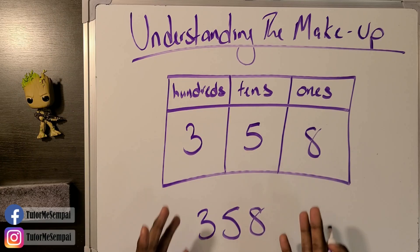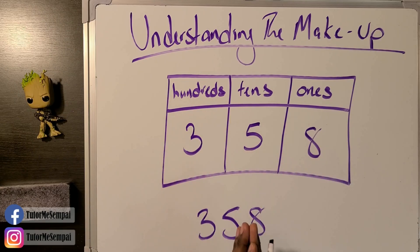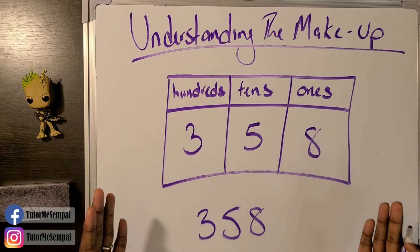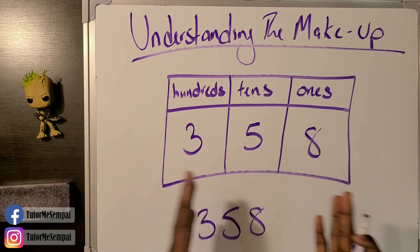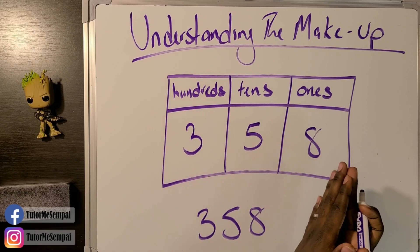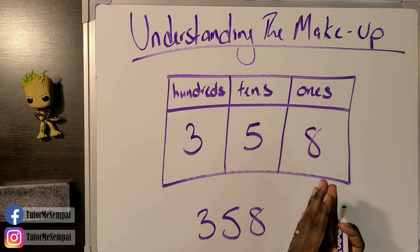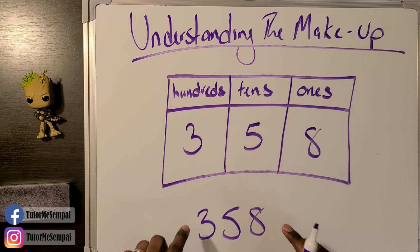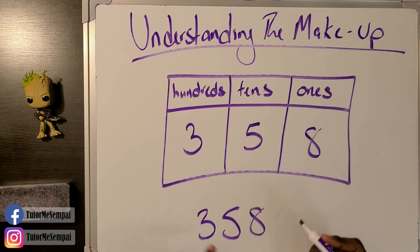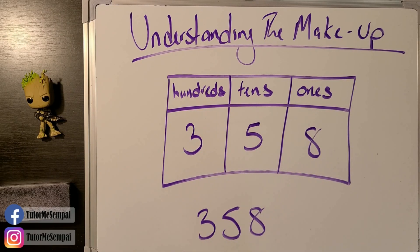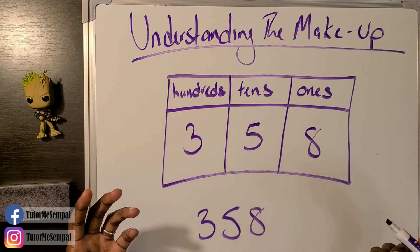Filling out a place value chart is quite literally just writing your number into it as it is. However, understanding it means knowing what each digit truly represents — breaking it down into ones, tens, and hundreds.